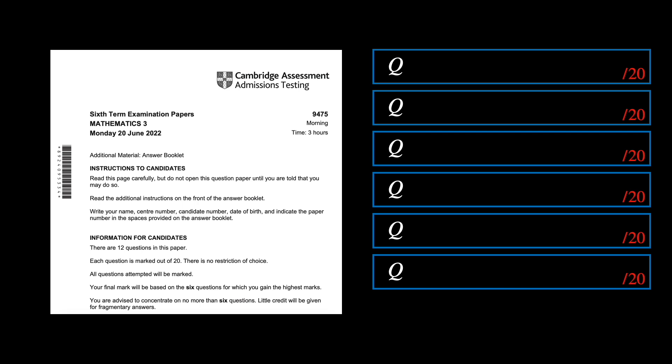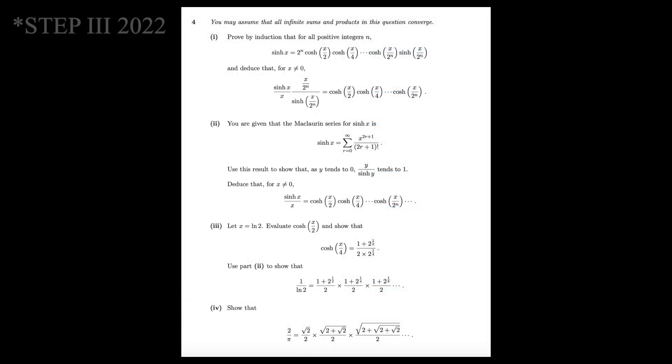Candidates are required to attempt any 6 of the 12 questions. Each question weights 20 marks, giving a full mark of 120 marks. This equation came up as a part of the question in STEP 3 of 2022, the harder paper of the two held every year.